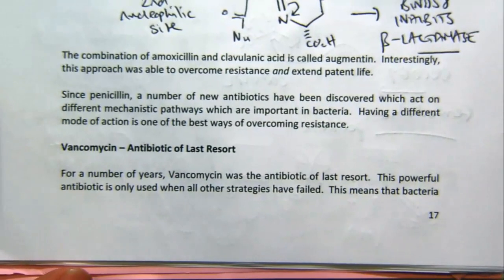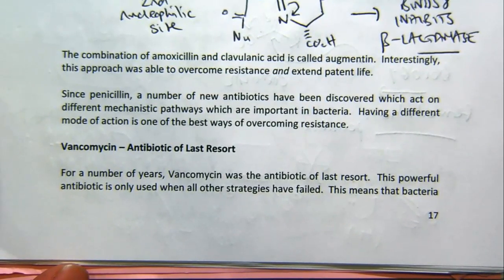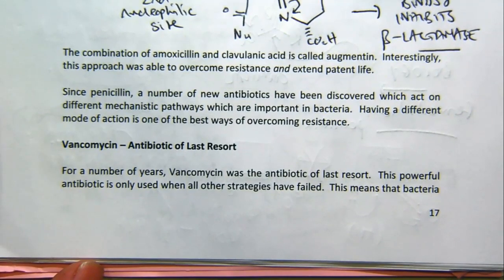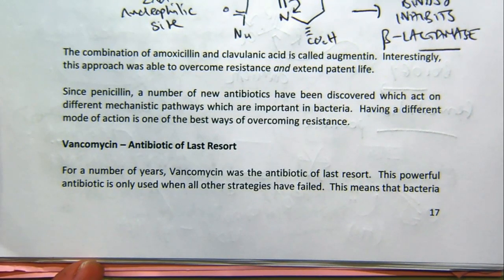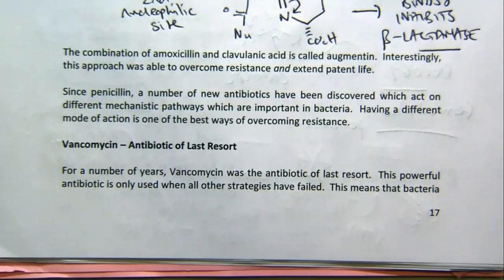For a number of years — it's not the case anymore — vancomycin was the antibiotic of last resort. What that meant is they only used it if everything else had failed, and they only would use it in a hospital setting. It's pretty unusual — probably one in a thousand have had it. It means you had a very resistant bacterial infection, and they thought you were going to die, basically.